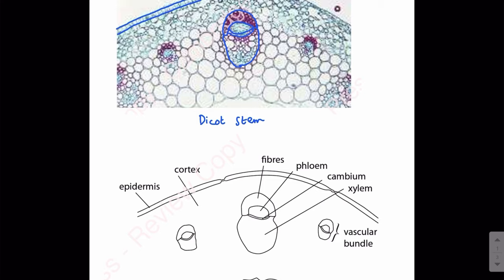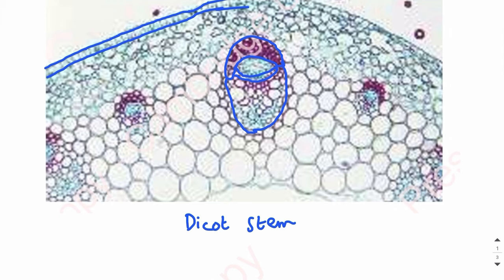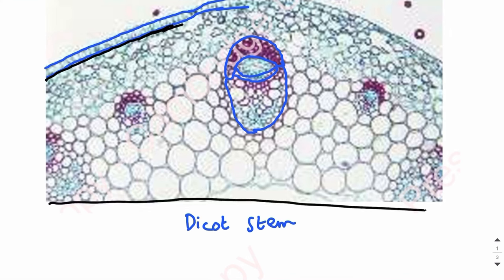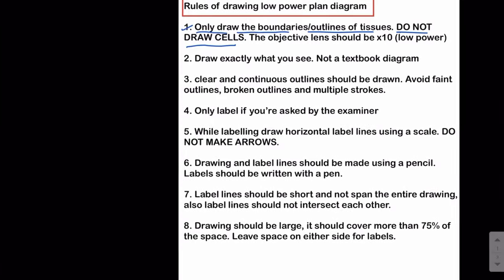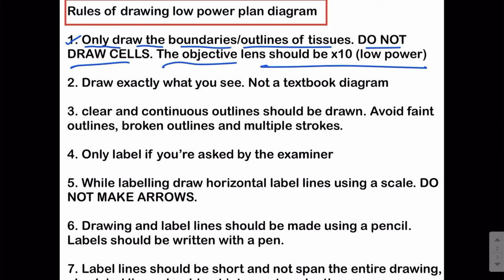Again, you don't draw cells — you just draw the outline. From where the epidermis ends to a certain point, there is cortex; you just mention the cortex and don't draw cells. The key points to know: only draw the boundaries or outlines of the tissues, do not draw cells — this is very important — and the objective lens should be ×10 or low power.